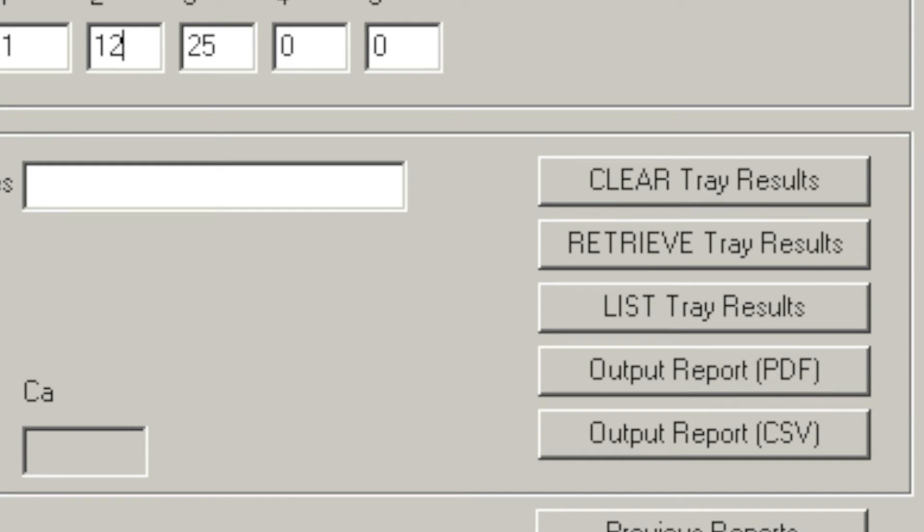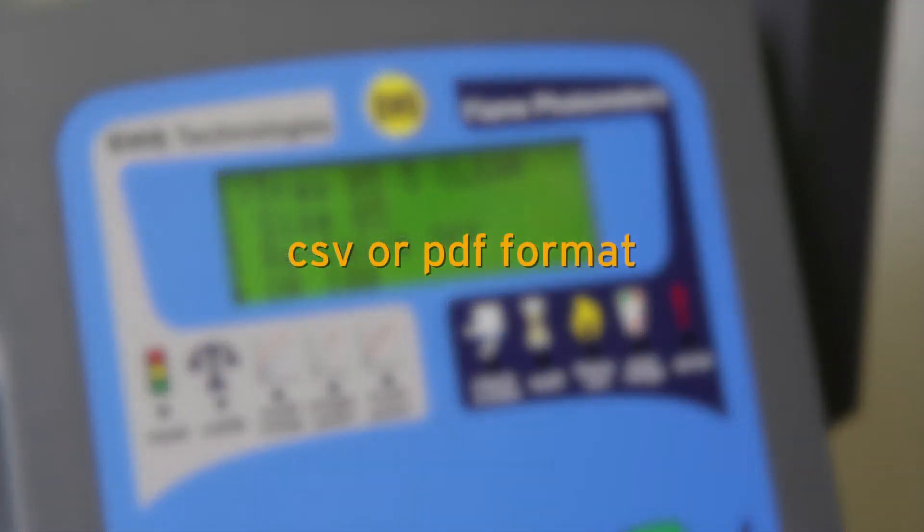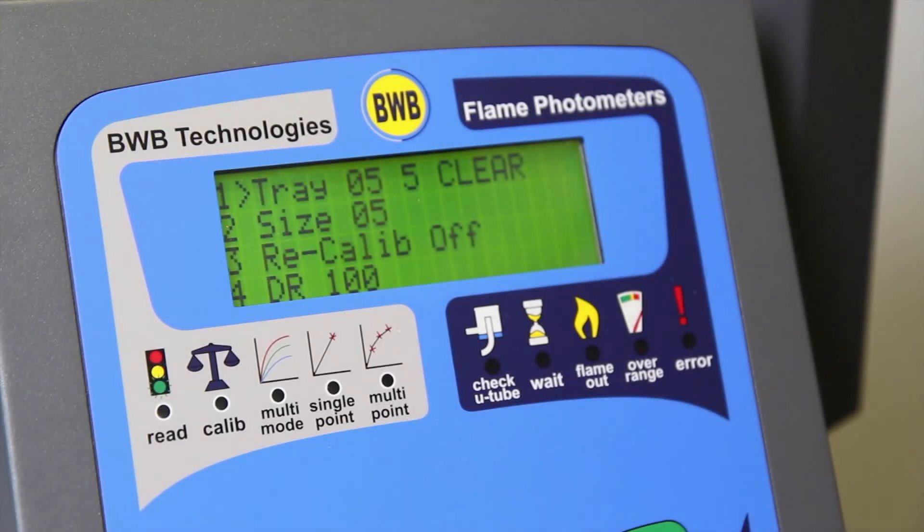Once the results have been transferred to the FPPC software, they can be formatted into suitable reports in CSV or PDF formats, and stored at a convenient location on the user's PC or network.